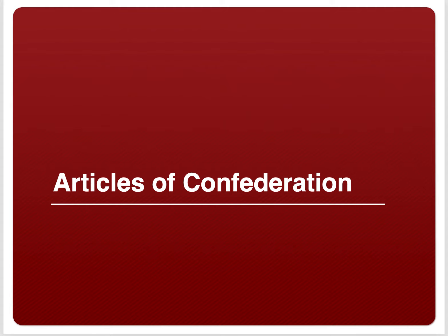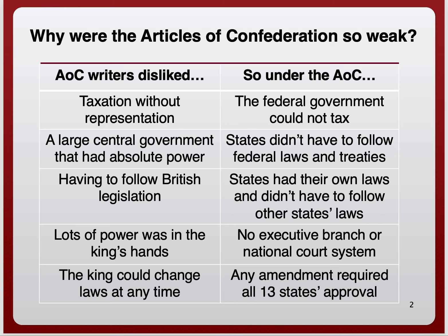The Articles of Confederation would be in existence for about five years before we realized we needed a change. As far as structure, a lot of it had to do with state powers. The writers were very concerned about a strong national government, so under the Articles, the states held most of the power.